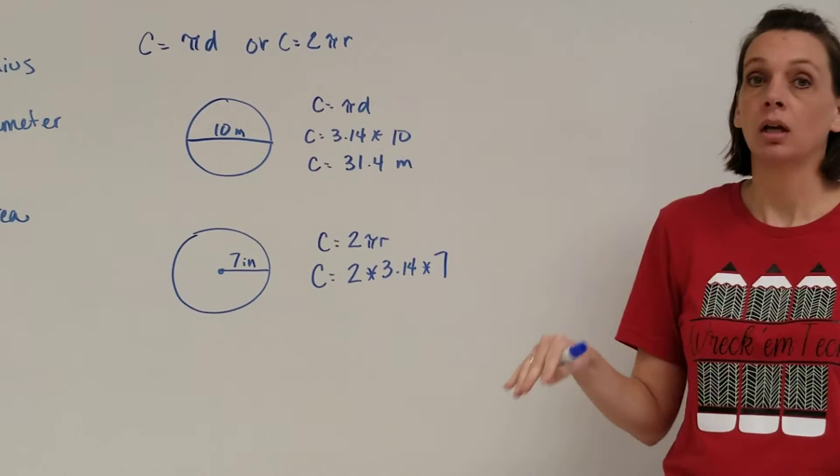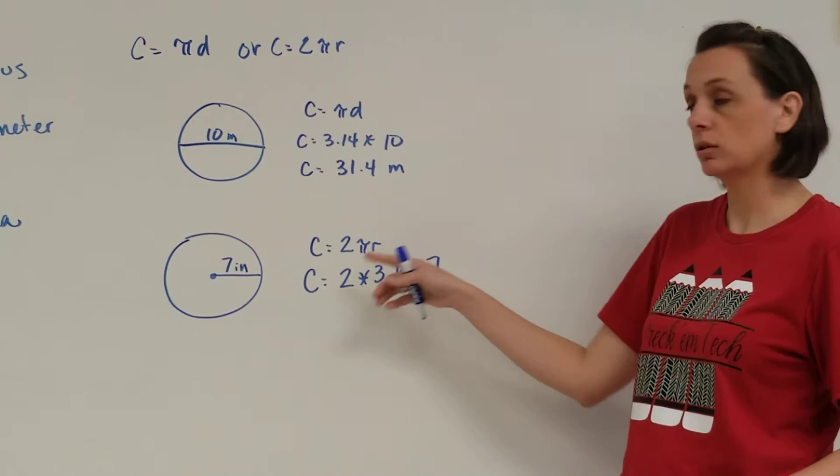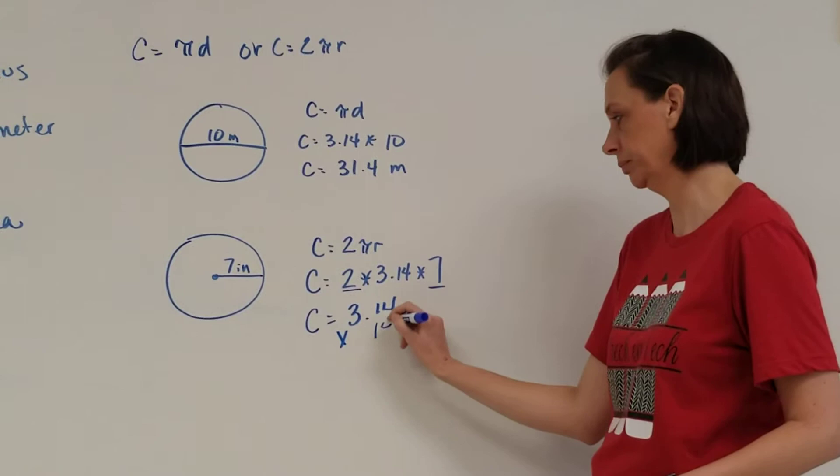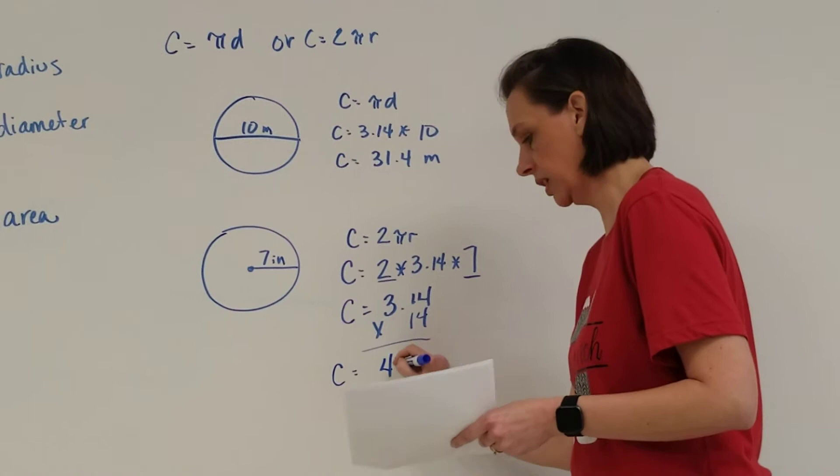Again, multiplying I can do in any order. I think it's easier in your head to go ahead and do your whole numbers first and go, 2 times 7 is 14 and just go, I'm going to have 3.14 times, 2 times 7 is 14. You work that out and you get a circumference of 43.96 inches.